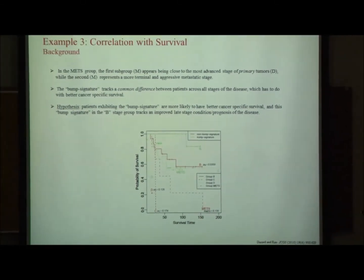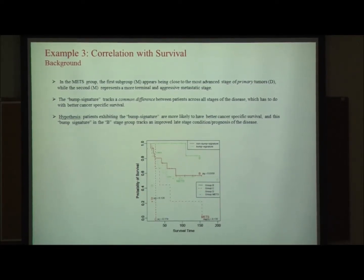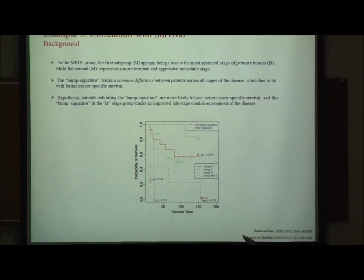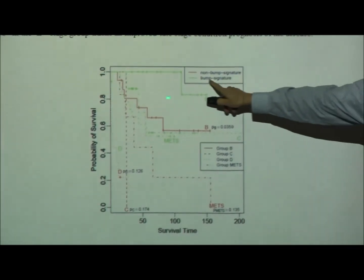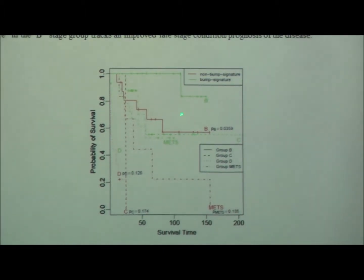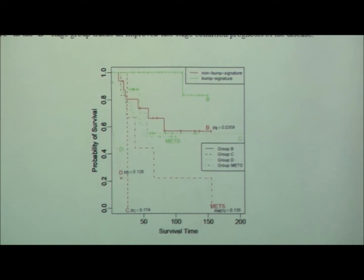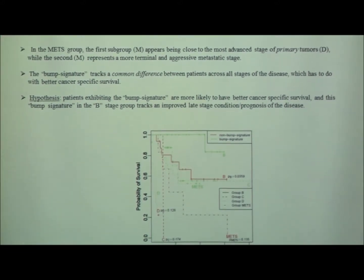Using the survival data for this dataset in an unsupervised way, we tried to see if the groups we found had any clinical relevance. Indeed, if you have the bump signature, for instance in group B, you're actually better off. We found this in all groups including the metastases C, D, and B. So that signature was a good prognostic signature that we could trace back all the way to the early stages — it has some clinical value for prognosis.